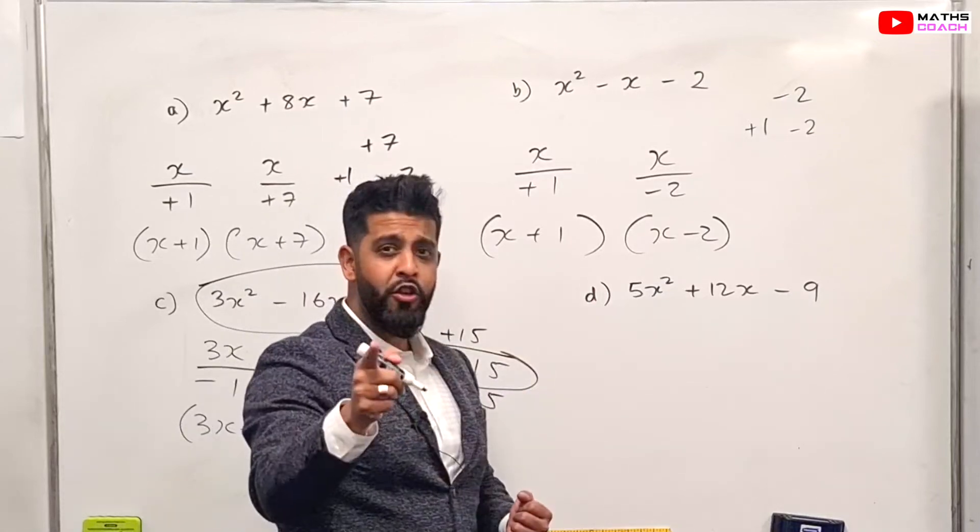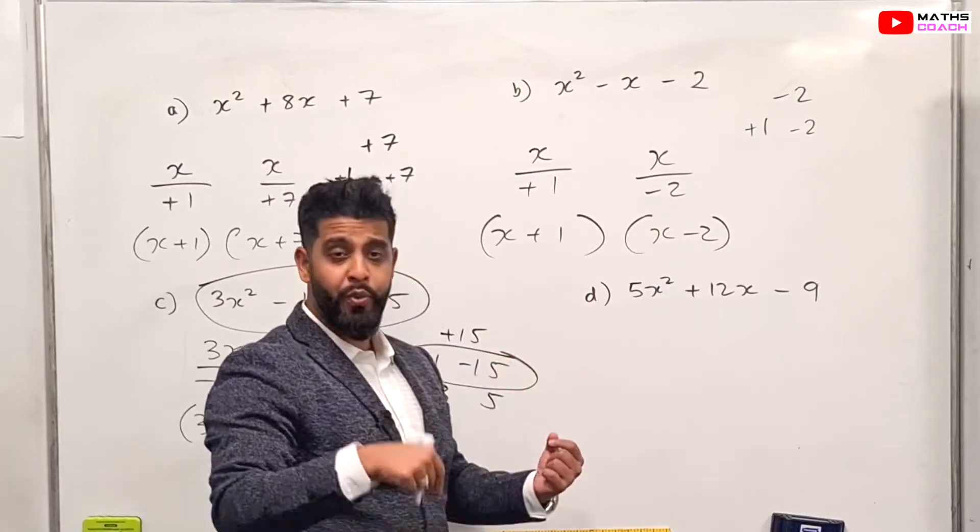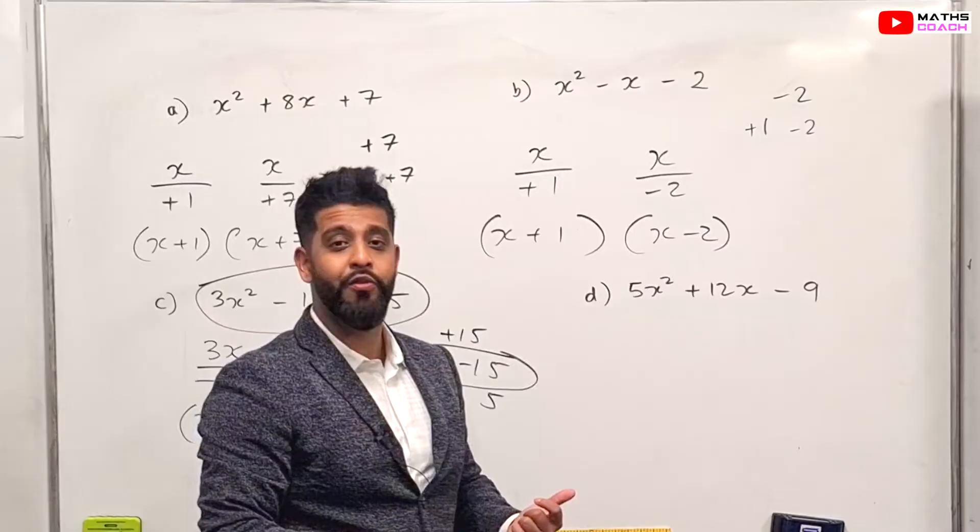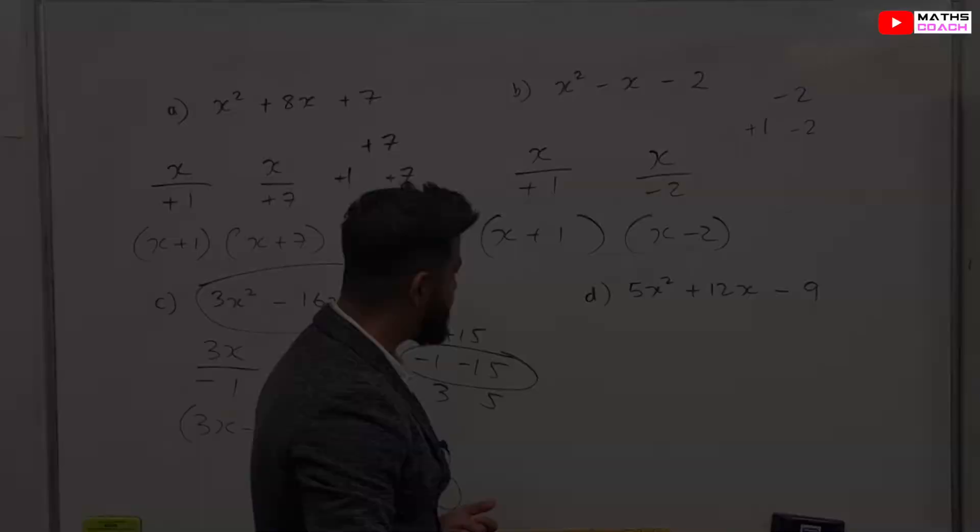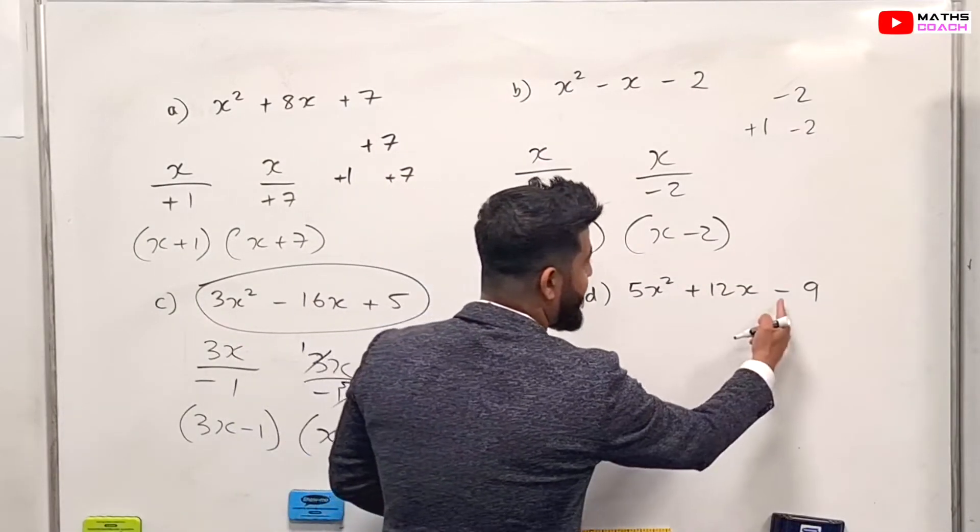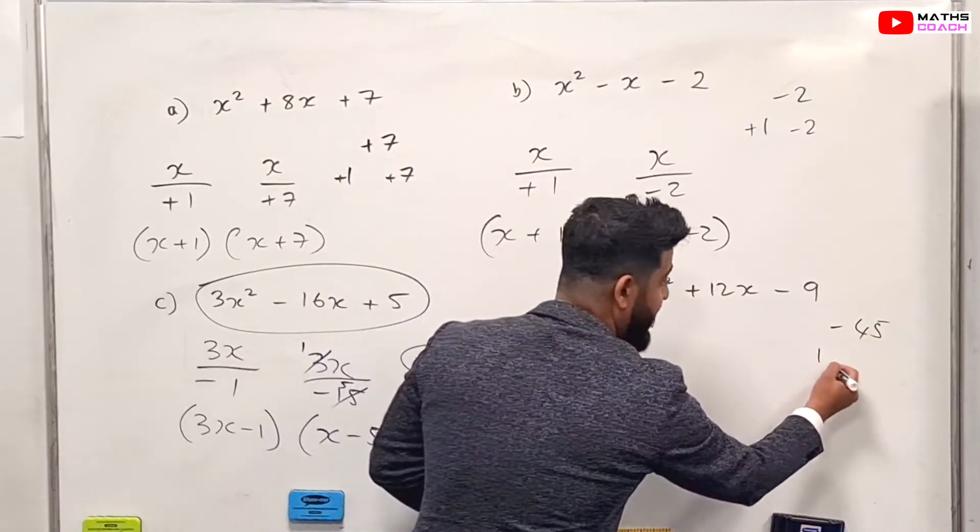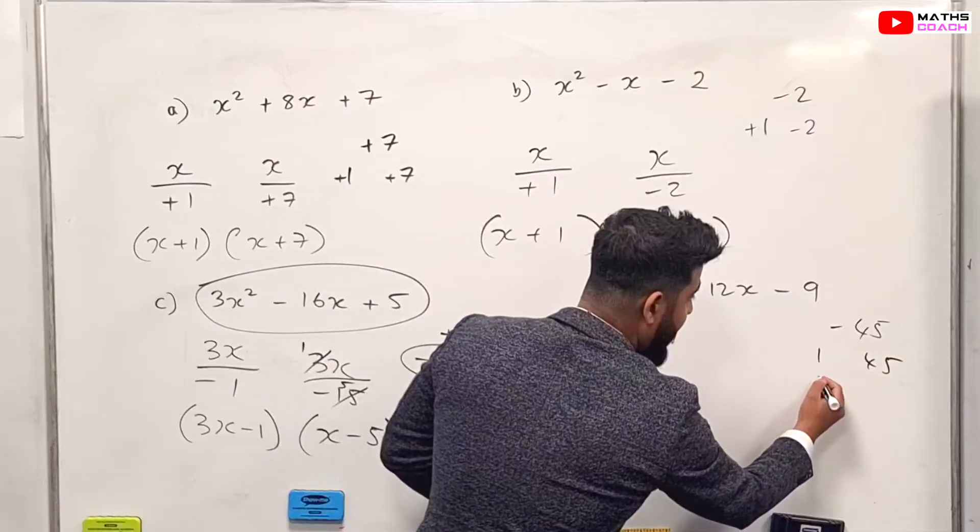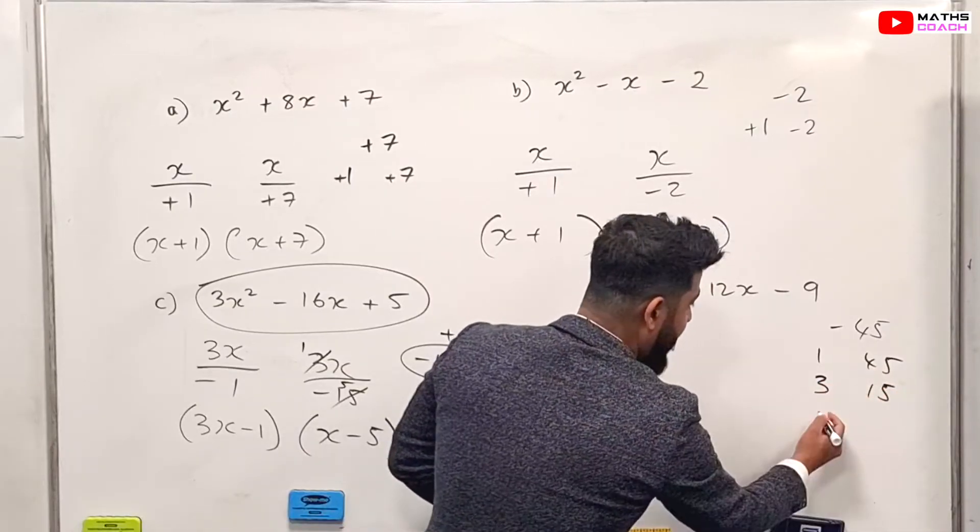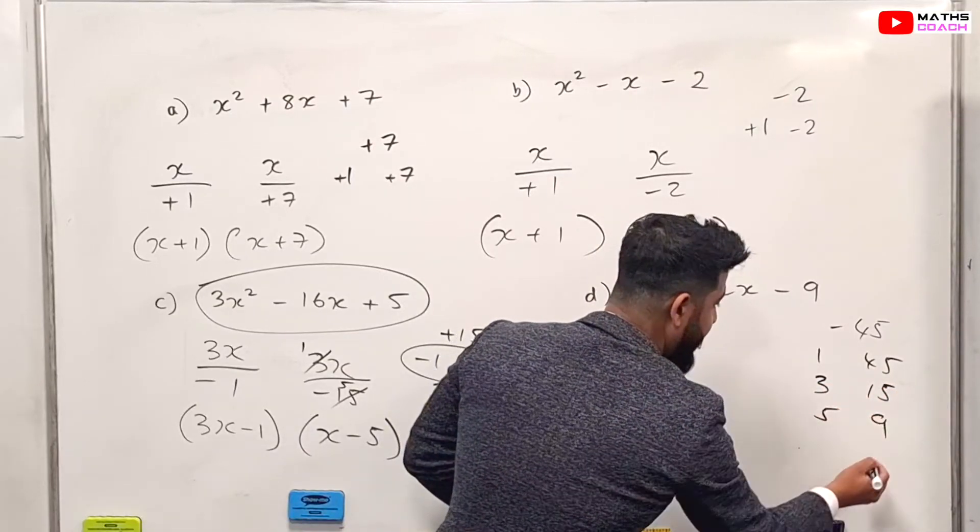On to the final one. Maybe you could try this method yourself. Pause the video here and press play again when you're ready to go through the solution with me. All right, so let's see what we did here. You do five times minus nine, which is minus 45. Find the factors of 45, so one, 45, three and 15, five and nine. And again, what we're looking for, we're looking to make 12.